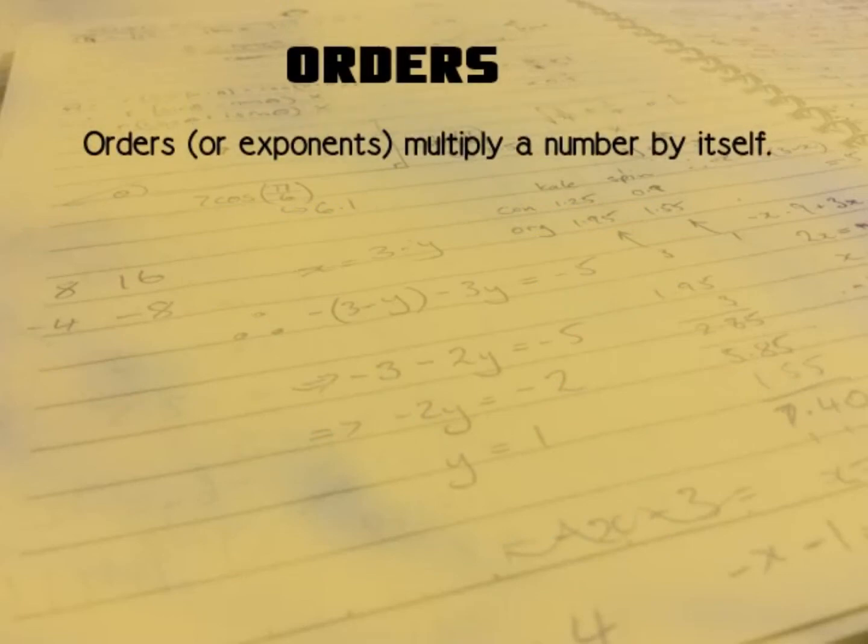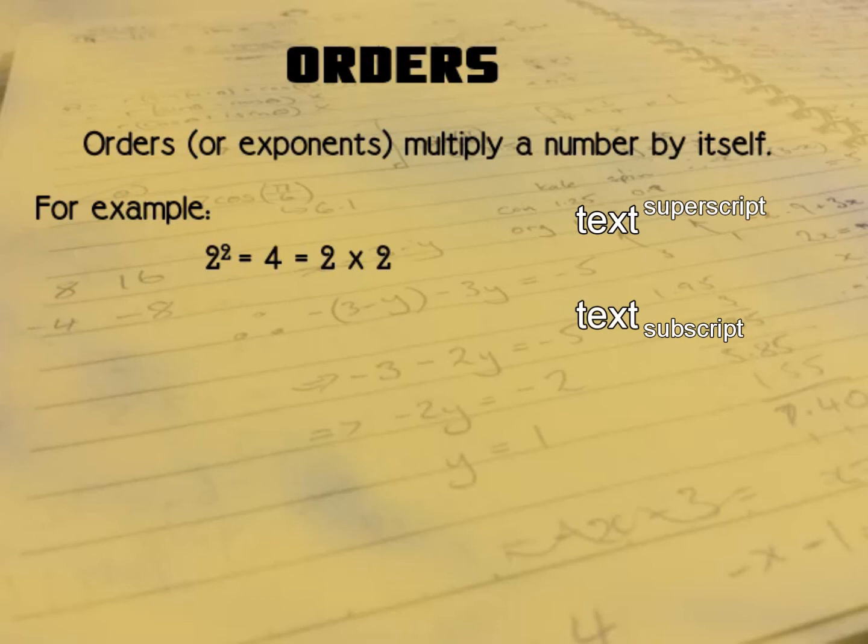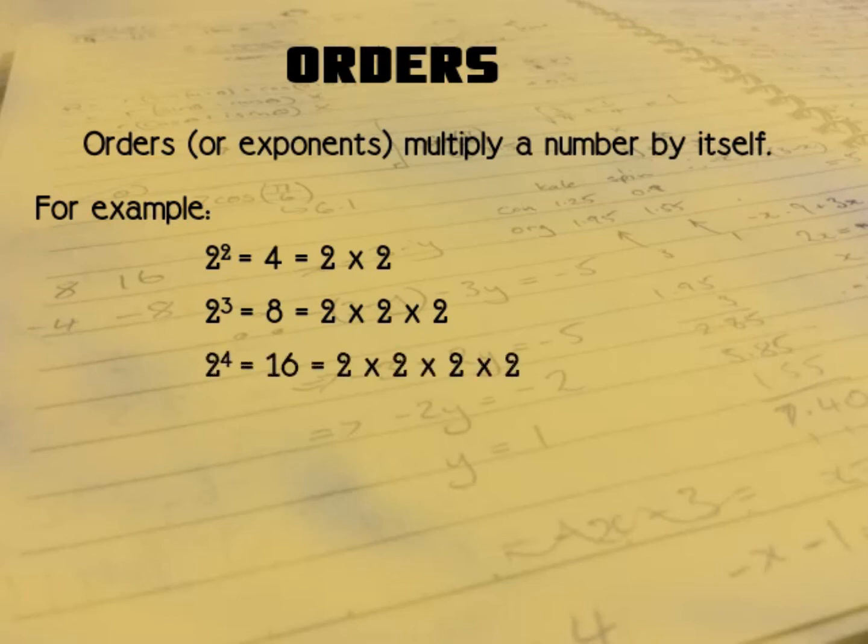Orders, or exponents, multiply a number by itself. It's really straightforward. So here we have 2 to the power of 2, and we use a little superscript to show the power. 2 to the power of 2 equals 4 because it is 2 times 2. Then we have 2 to the power of 3 which equals 8, because it is 2 times 2 times 2—two multiplied by itself three times. And then of course we can have 2 to the power of 4 which is 16, that is 2 times 2 times 2 times 2. You can do this with any number and raise it to any power, and these numbers get very very big very quickly.